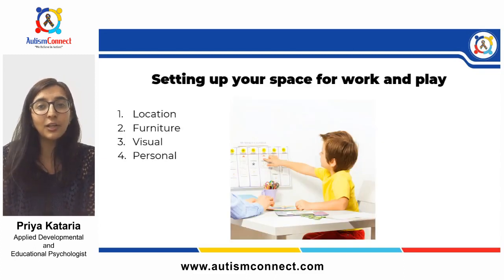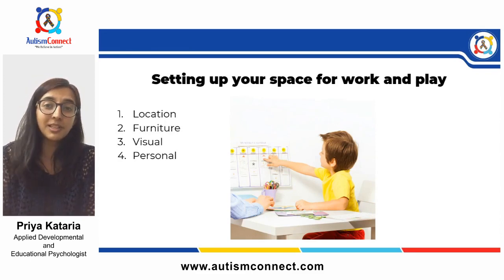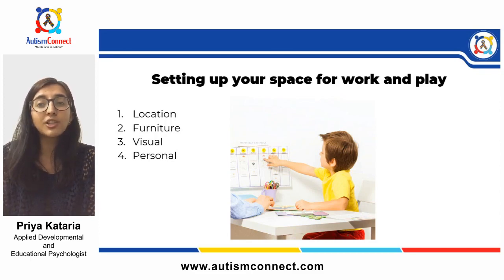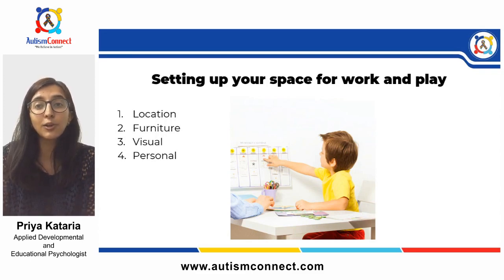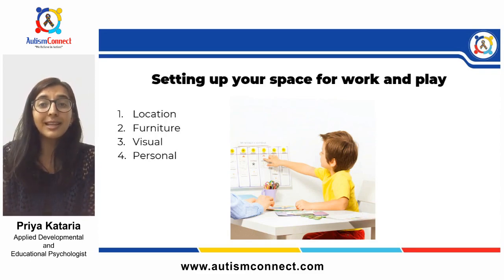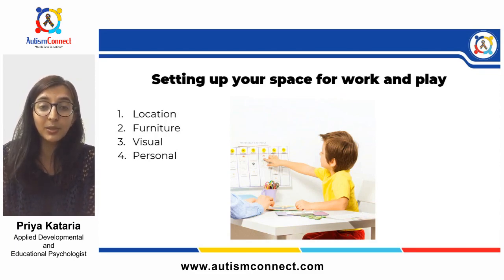The first thing to look into is location. Select a space in your home that is free from distractions and clutter. Keep the space simple — only have the materials or activities required for that particular task. Try to choose an area that is well ventilated and has lots of natural light. Corners sometimes work well if the child has a tendency to get up and leave in the middle of a task. Ensure this space is used consistently so your child can associate it with learning.